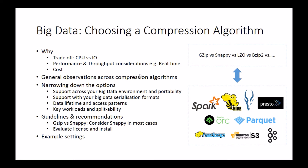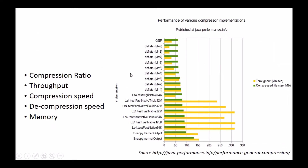Before we dive into the specific recommendations, let's sidestep and take a look at the behavior of various compression algorithms. Broadly, these are some of the parameters that you will keep in mind as you're assessing them. First is the compression ratio — that basically implies how much data has been compressed, or how good the actual compression itself is from the source to the destination.